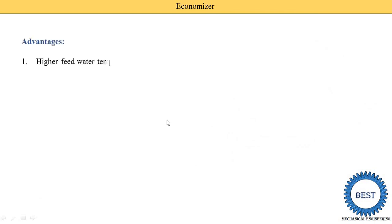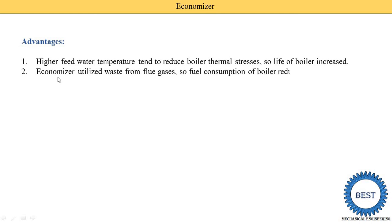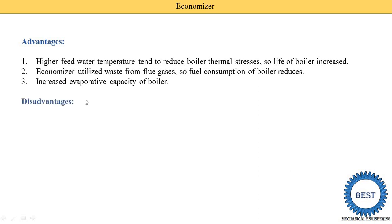The advantages of the economizer are: higher feed water temperatures tend to reduce the boiler thermal stress, so the life of the boiler is increased and boiler efficiency is improved. Economizers utilize waste heat from the flue gases, so fuel consumption of the boiler is reduced because water is supplied at higher temperatures, meaning the mass of fuel supplied is reduced. The economizer also increases the evaporative capacity of boilers, meaning it increases the steam generation rate.